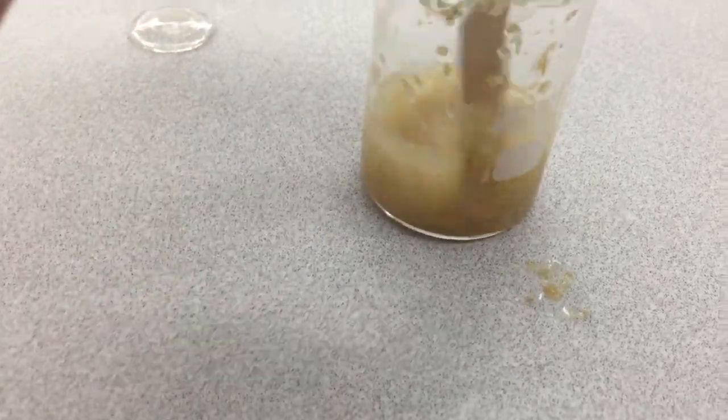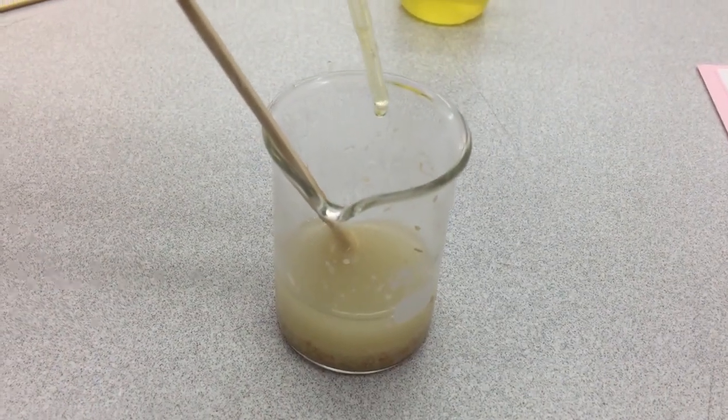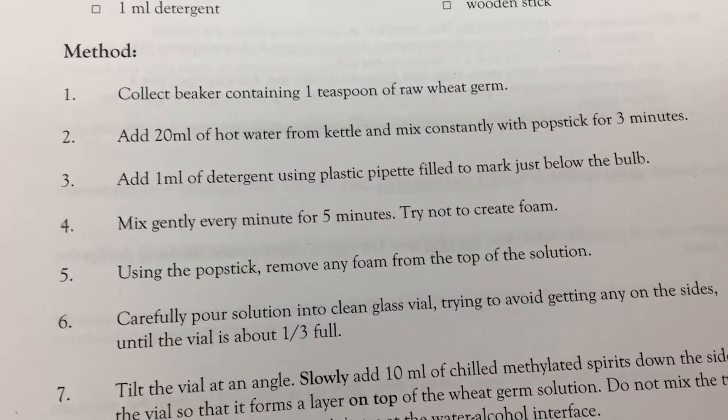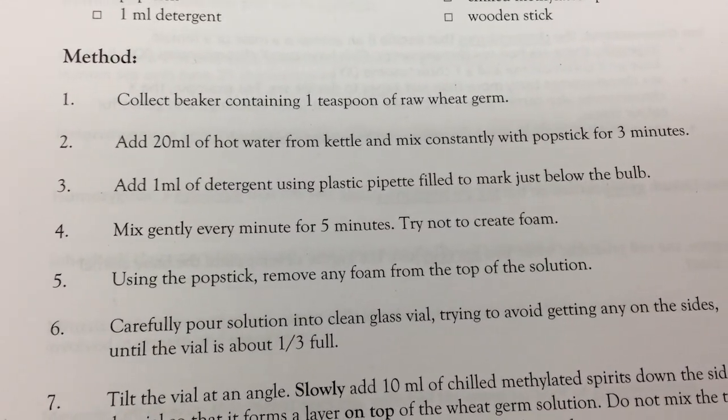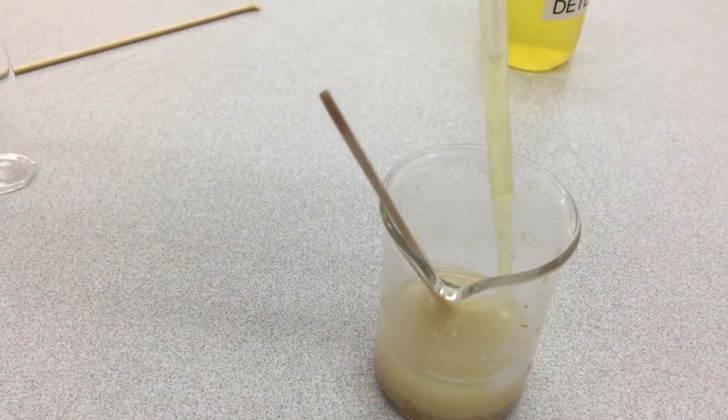I won't record for that longer. All right, we have mixed for 3 minutes, and now we are going to do step 3, add 1 milliliter of detergent using a plastic pipette, filled to just below the bowl. So we're going to add our detergent now. In it goes.